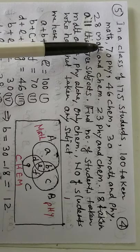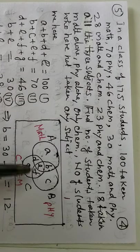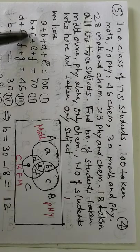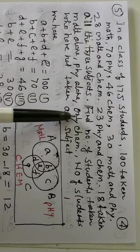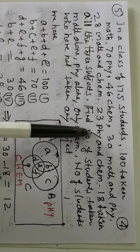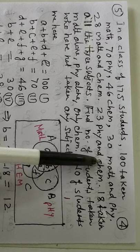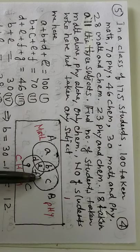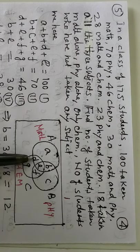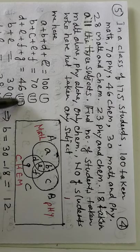Again, 70 taken physics. B, C, E, F. B, C, E, F, 70. And 46 taken chemistry. This is chemistry. D, E, F, G. D, E, F, G, 46.